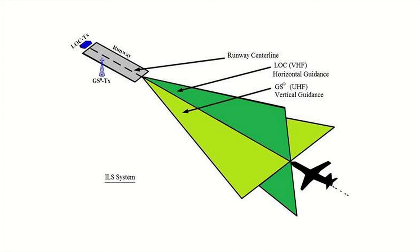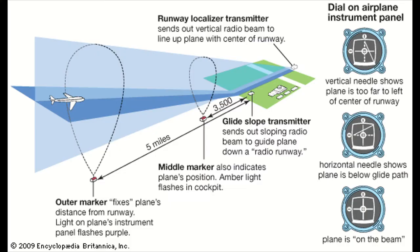The aircraft must align with the plus sign. Then the centerline approach is correct. You can see the picture of the ILS system in a general aviation aircraft. The vertical needle shows if the plane is too far to the left of the runway centerline. The third instrument shows the correct position — the aircraft aligns with the cross.